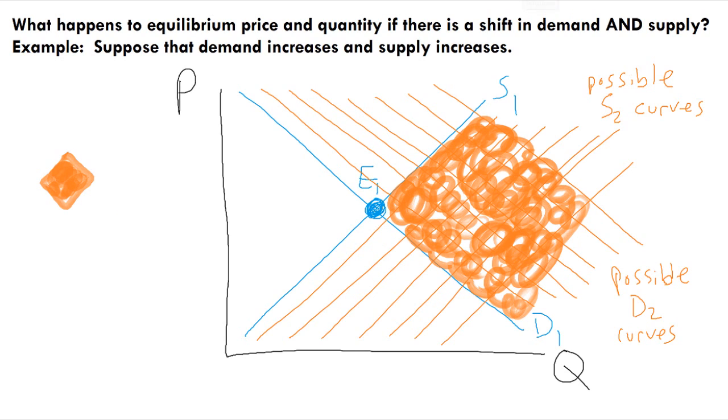So now we can note the comparison between E1 and this area that we've labeled E2. The entire E2 area is to the right of E1, showing that quantity will always increase. But E2 is both above and below E1, showing that the price could go up or down or remain the same.